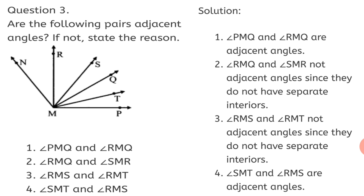Fourth pair — Angle SMT and Angle RMS: they have common vertex M, common arm MS, and their interiors are also separate. So this fits the criteria for adjacent angles. Hence, Angle SMT and Angle RMS are adjacent angles. Students, kindly solve the sums in your book and understand the concept well. Keep learning, stay safe, and thank you.